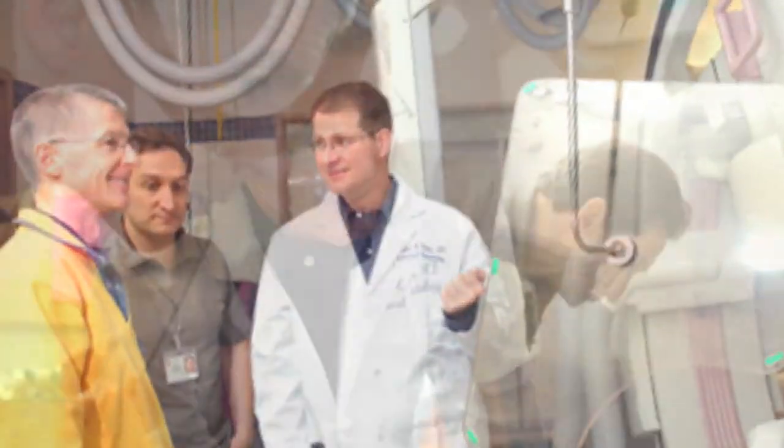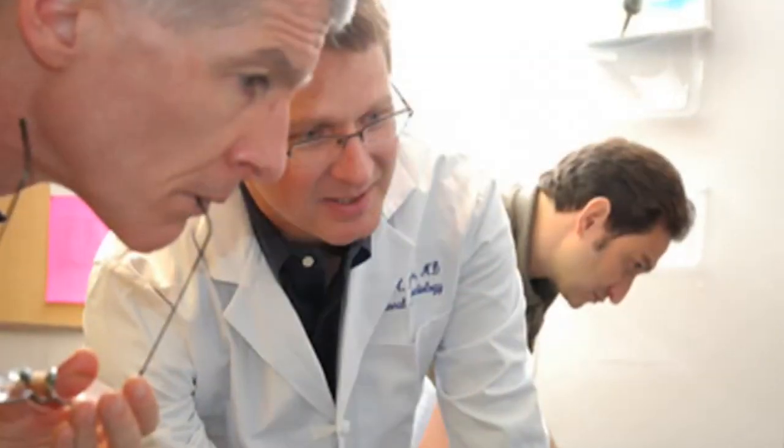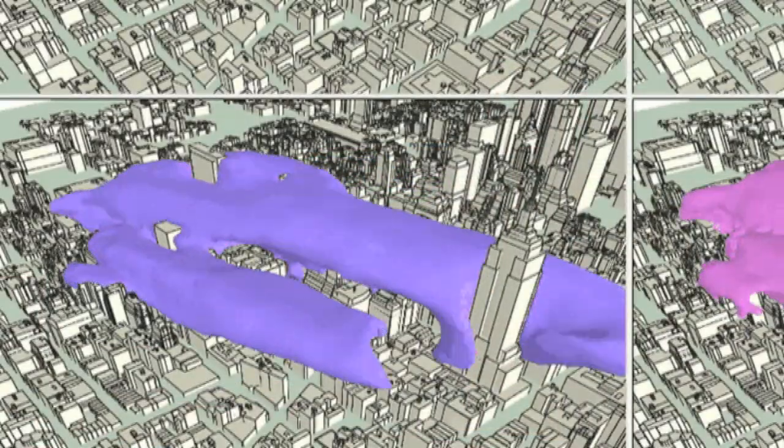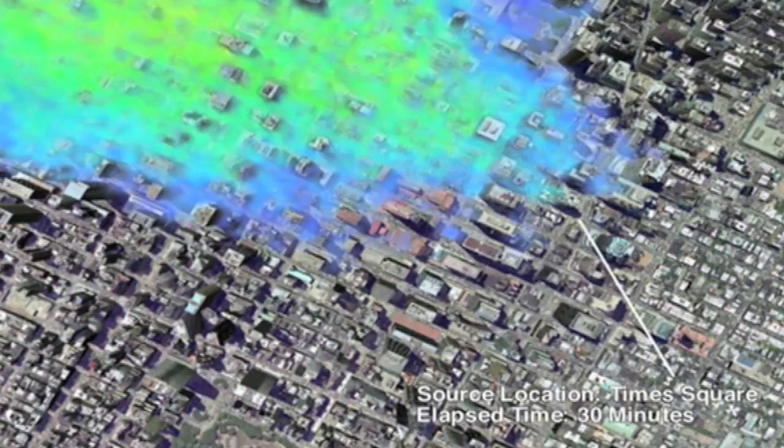Our centre has five strategic areas of research. Two of them are targeted towards homeland security. The first one is blast simulations, that is to say how to protect buildings and to mitigate the effects of blasts. The second one is the dispersion of hazardous materials in cities, in urban areas.